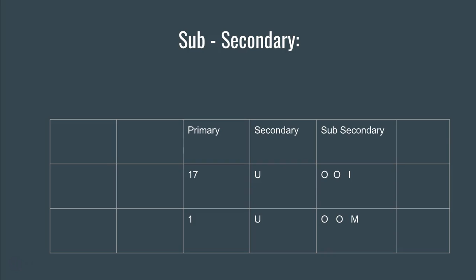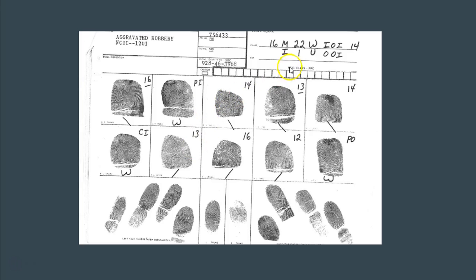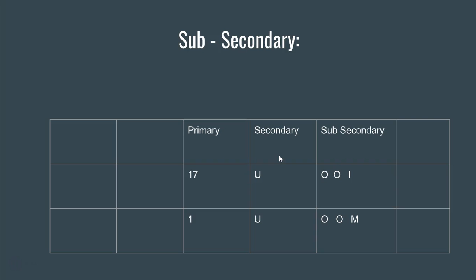The sub-secondary goes just to the right of the secondary in our classification. So to recap: the primary deals with where the whorls are; the secondary deals with what pattern is present in the two index fingers; and the sub-secondary goes just to the right of the secondary. It deals with fingers 2, 3, and 4, and fingers 7, 8, and 9.